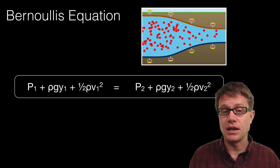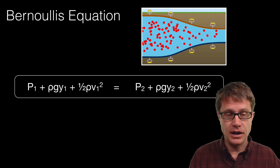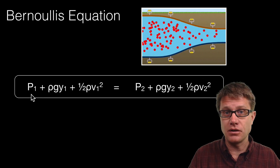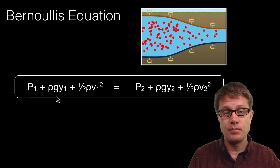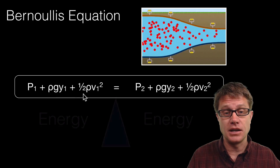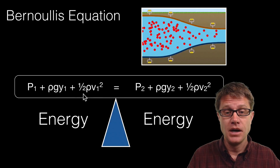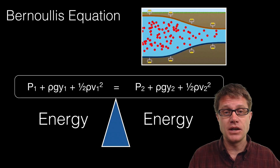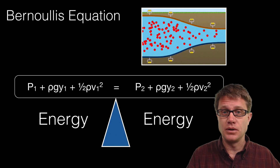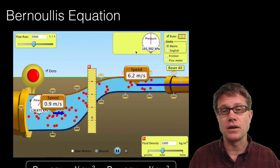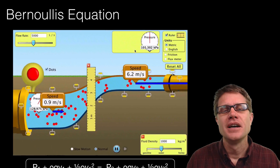Bernoulli's equation has three terms on each side: pressure energy, potential energy, and kinetic energy, and they balance — it is conservation of energy. If we know what is on the left side, we can solve for what is on the right side.